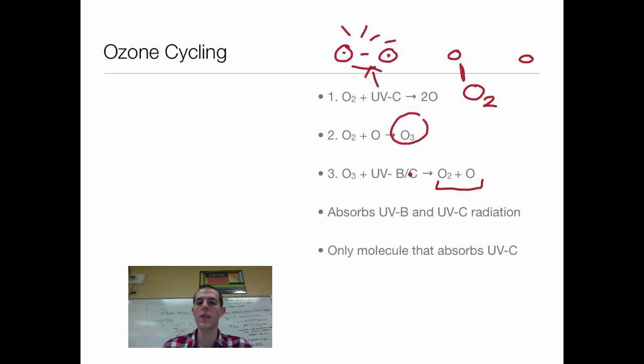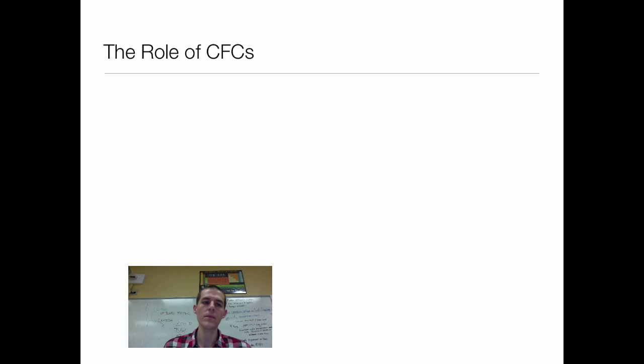So if you notice, this is a whole cycle that bounces between the formation of O2, the breakdown of O2, the formation of O3, the breakdown of O3. This cycle ensures that we have got the ozone that we need in the atmosphere, but it also ensures that we have got the oxygen gas that we need to breathe. So make sure that you understand this cycle and how this cycle leads to the absorption of UVB and UVC radiation. Important thing to note is that ozone is the only molecule that absorbs UVC radiation.